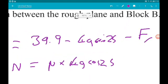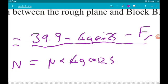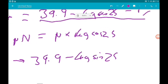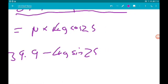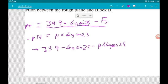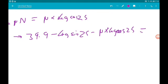Okay, so again now using this, we're going to put friction in. So we get 39.9 minus 4g sin 25 minus friction, which is μ times 4g cos of 25. And we know that this is equal to 0.